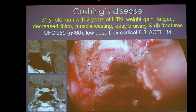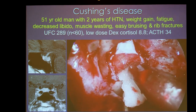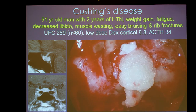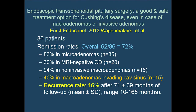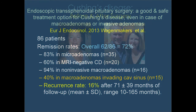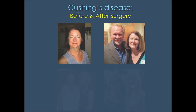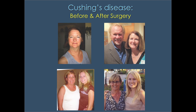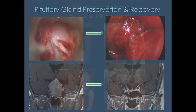Hydrogen peroxide goes in straight out of the bottle — cheap and it works, hopefully. Looking at the endoscopic literature for Cushing's, one European paper showed an overall remission rate of 72%, right in line with microscopic approaches. For invasive tumors, only 40% achieved remission. So the endoscope is good, but probably not better than the microscopic approach for this particular disease.